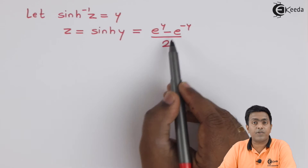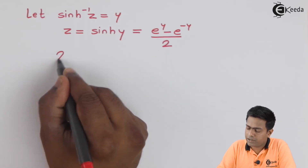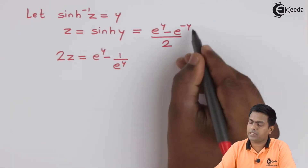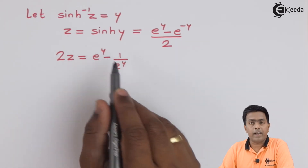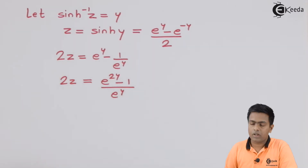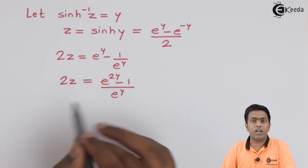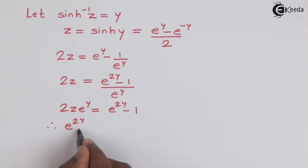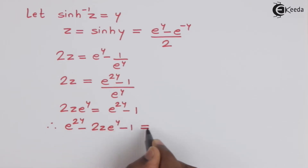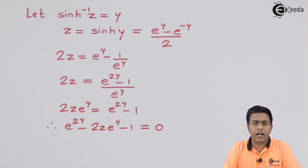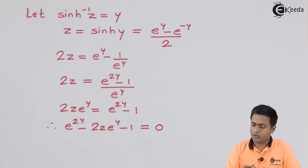Cross-multiplying gives 2z = e^y − e^(−y), which is e^y − 1/e^y. Taking the LCM and rearranging all terms to one side, we obtain a quadratic equation in e^y.